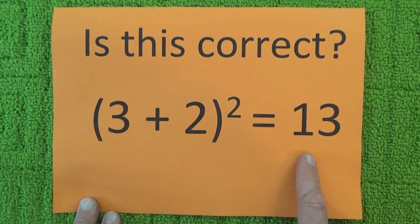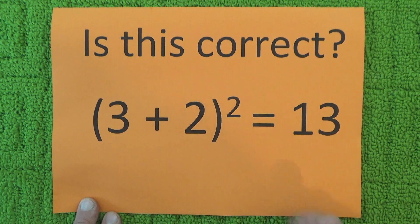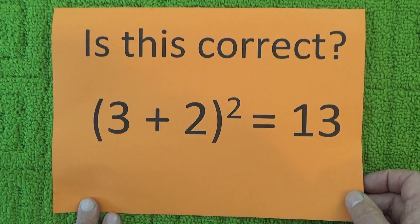Hello. I saw this equation the other day: 3 + 2² = 13, and I thought to myself, no, that's not correct.